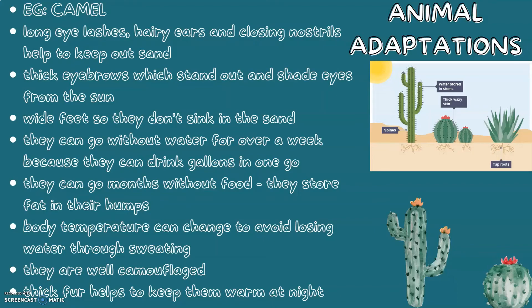Camels can go without water for over a week because they can drink gallons in one go. They can also go months without food, storing fat in their humps. Their body temperature can change to avoid losing water through sweating. They are also well camouflaged in the desert, and their thick fur helps keep them warm at night.